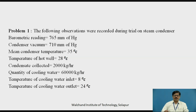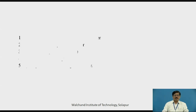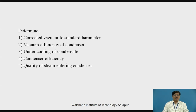This is the given data and we are supposed to determine: corrected vacuum to standard barometer, vacuum efficiency of condenser, undercooling of condensate, condenser efficiency, and quality of steam entering the condenser. Now let us see how we can find out each term one by one.